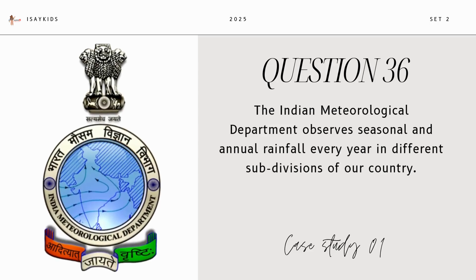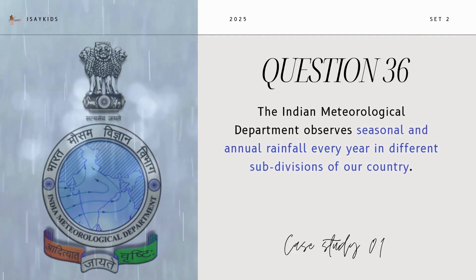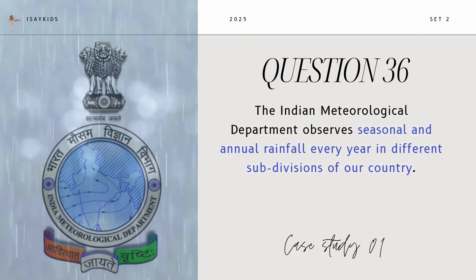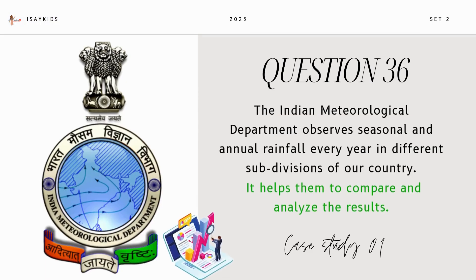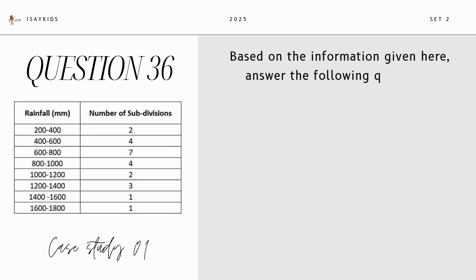The Indian Meteorological Department observes seasonal and annual rainfall every year in different subdivisions of our country. It helps them to compare and analyze the results. Based on the information given here, answer the following questions.